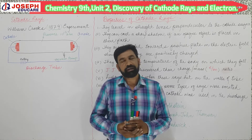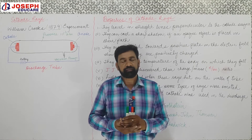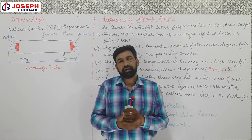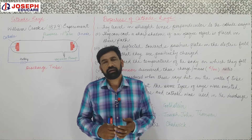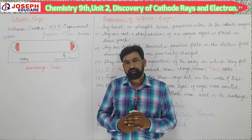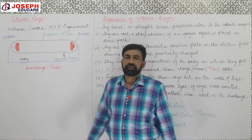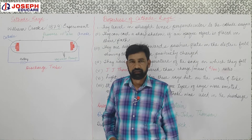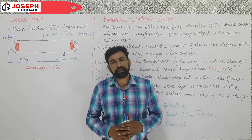Hello viewers, I am Joseph Kadeer and you are watching Joseph Educate. In Chemistry 9th, we started chapter 2, in which we have studied about the history of atomic structure — which scientists worked on atomic structure. This is the second lecture of that series, and today we will discuss the discovery of cathode rays and the electron, because cathode rays were the basis for the discovery of the electron.